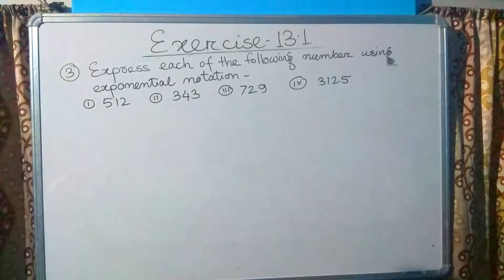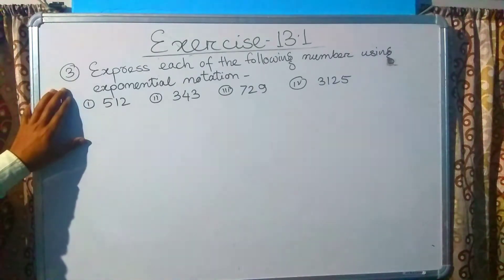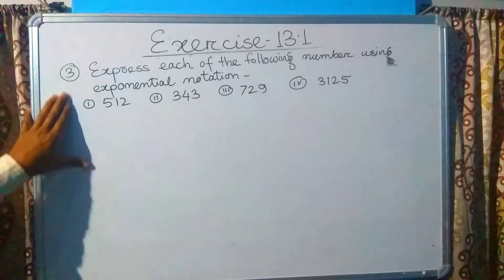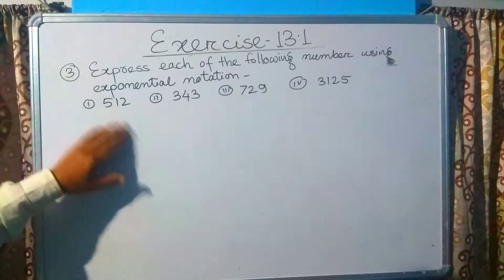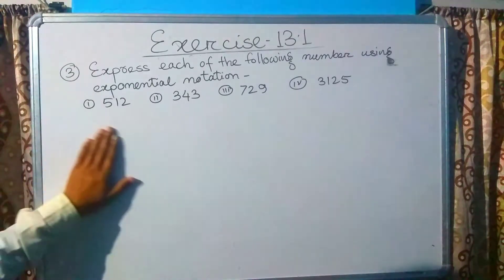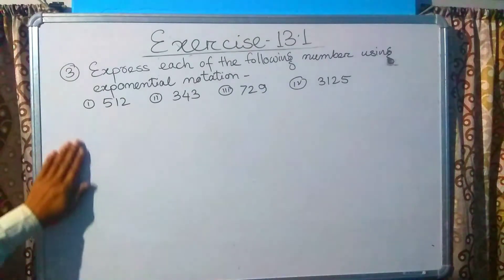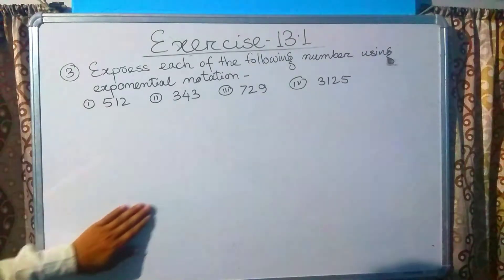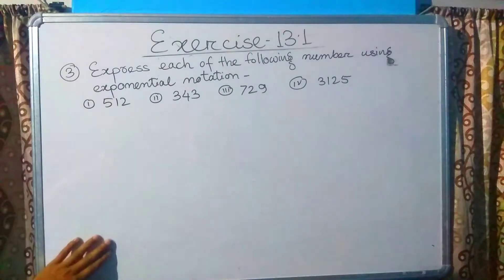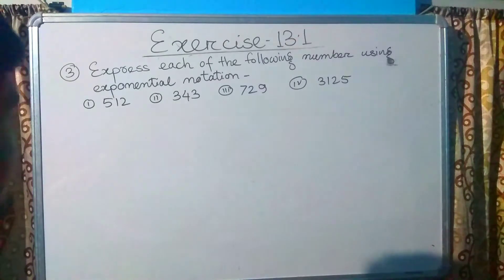Question number 3: Express each of the following numbers using exponential notation. To do this, we need to convert each number to its prime factors, and then write the number in exponential notation.